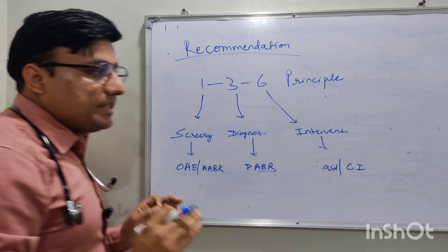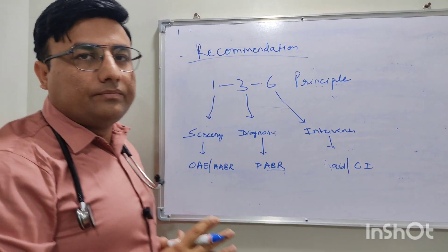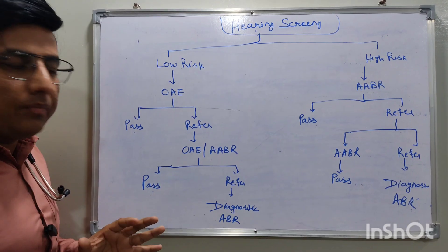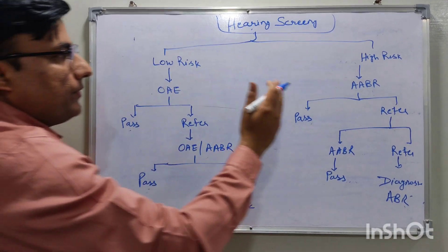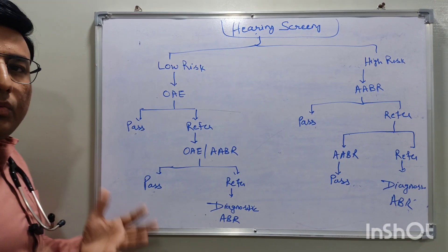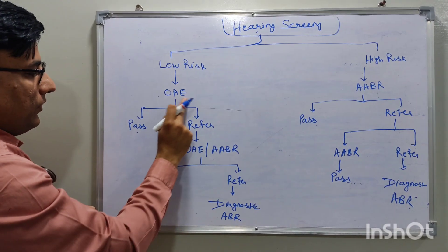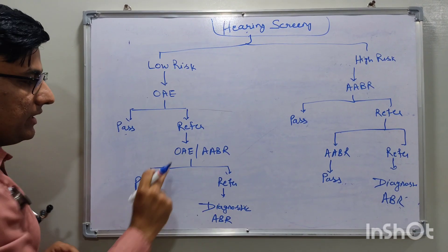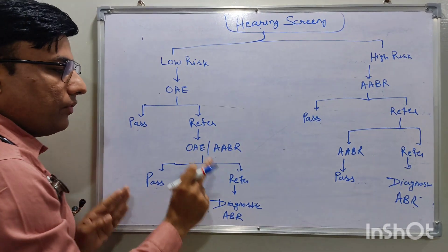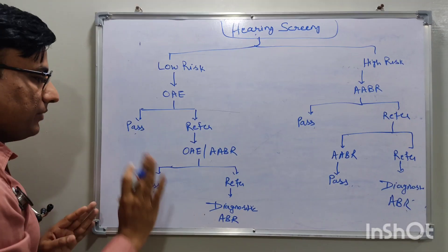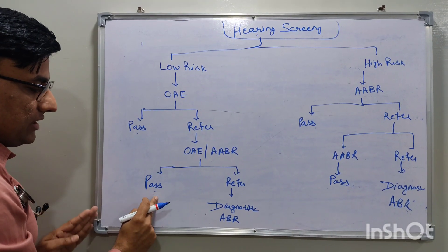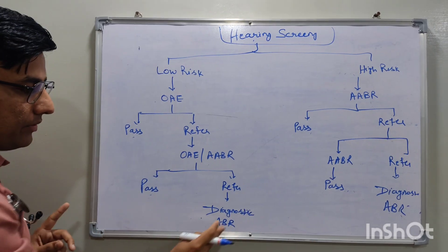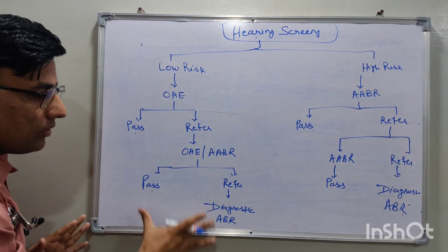In the screening flowchart: first categorize whether the baby is low-risk or high-risk. For low-risk healthy newborns, do OAE screening. If OAE passes, nothing further is needed. If OAE fails or is referred, do a repeat screening or automated ABR. If the repeat test passes, nothing to be done. If it still fails twice, the baby goes for diagnostic ABR before three months of age.